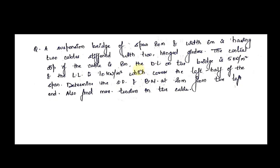The central dip of the cable is given to be 8 meters. The dead load on the bridge is given to be 5 kN per meter square and the live load is given to be 10 kN per meter square. You need to keep one point in mind: no shear force and bending moment is produced due to the self weight or due to the dead load on the bridge. So we don't need to consider the dead load. Therefore we will just consider the live load, which is 10 kN per meter square.